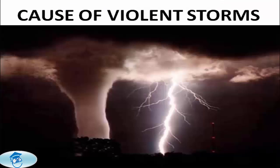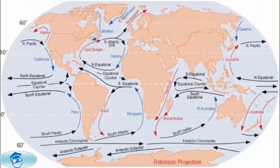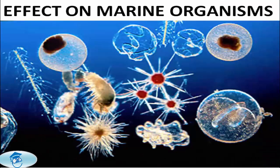Violent storms follow the line where cold and warm currents meet, just as fog does. The hurricanes off the coast of the United States follow the line where the Gulf Stream mingles with the cold Labrador Current. Regarding marine organisms: the sea has innumerable microscopic organisms called planktons, which fish feed on. Ocean currents move organic material off the coast, which is the food of planktons — the more the planktons, the higher the concentration of fish.